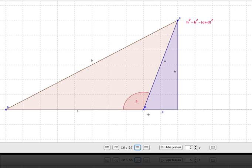Now the first part we see here if we take a look at the red triangle h² + (c + d)² = b². Or also h² = b² - (c + d)².